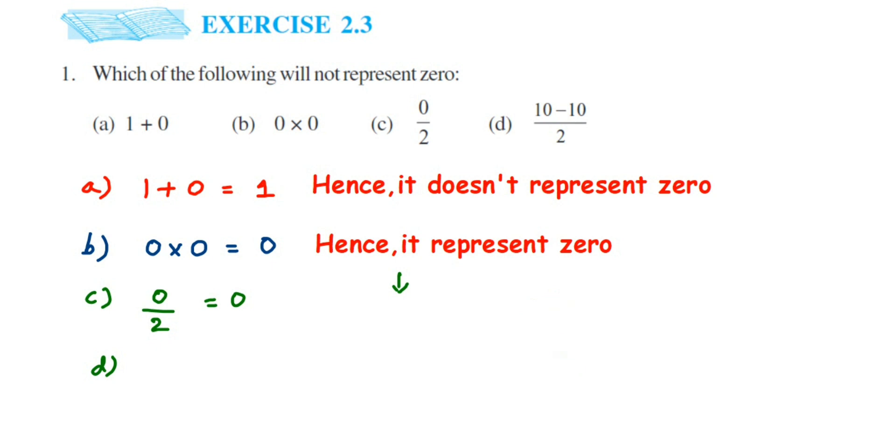Now let us go to the last question. In the last one we have (10 - 10) ÷ 2. Let us solve this. So 10 minus 10 will get 0. So 0 divided by 2 is again 0.